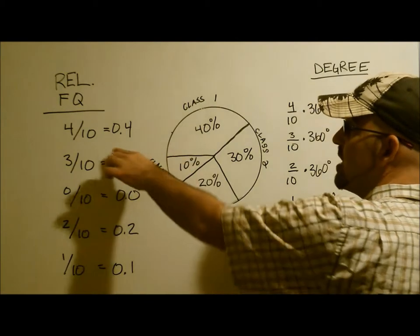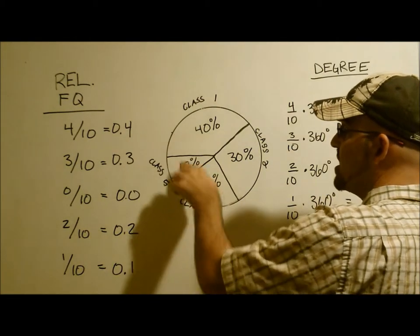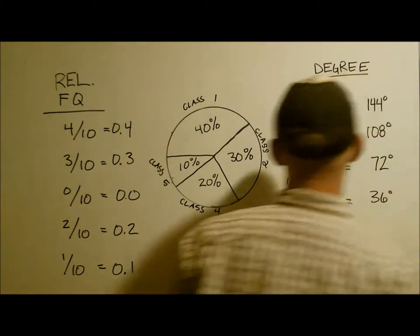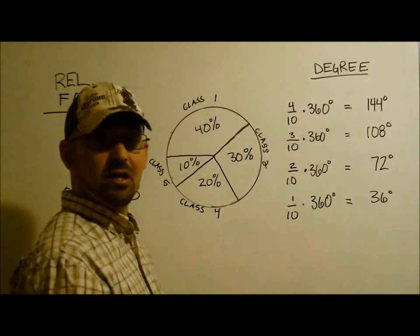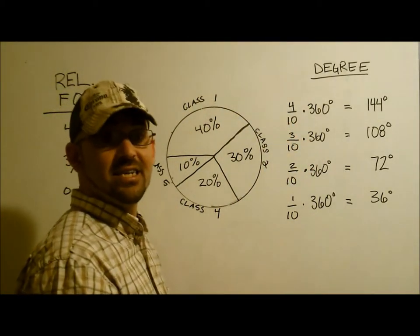And write the percentage of each item. If you'd like to know the degrees, all you have to do is multiply that by the relative frequency. Is that easy?